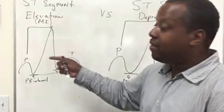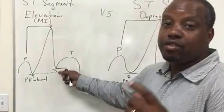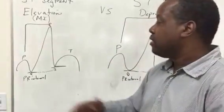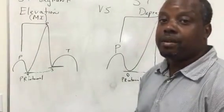But basically, if the ST segment elevation is higher, no matter if it's two small boxes, one millivolt versus four small boxes, two millivolt, still an MI. We treat it the same.